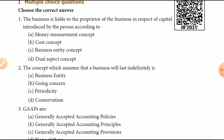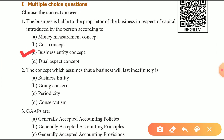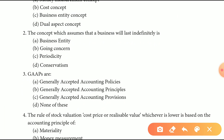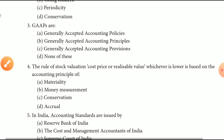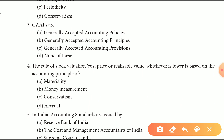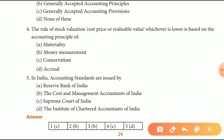Students, let's look at some questions. First: two businesses liable to the proprietor of the business in respect of capital introduced — this is the Business Entity Concept. Next: the concept which assumes the business will last indefinitely — this is Going Concern. Next: GAAP means Generally Accepted Accounting Principles. Fourth: the rules of stock valuation based on cost price or realisable value, whichever is lesser — this is Conservatism.